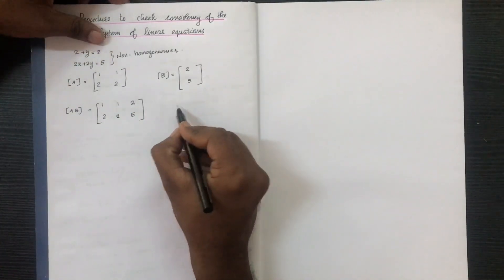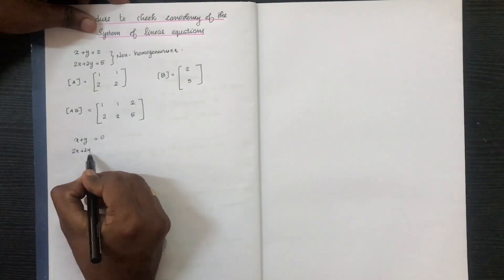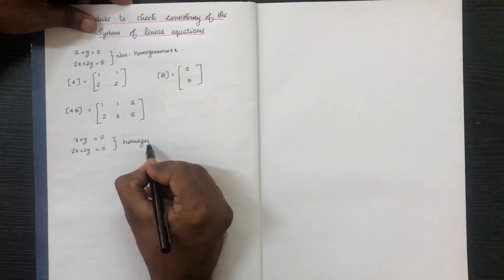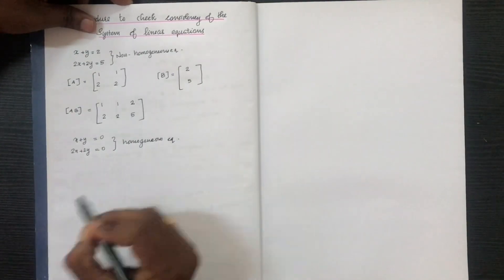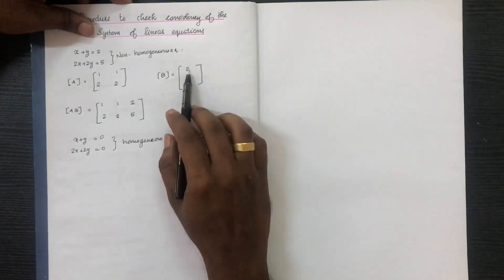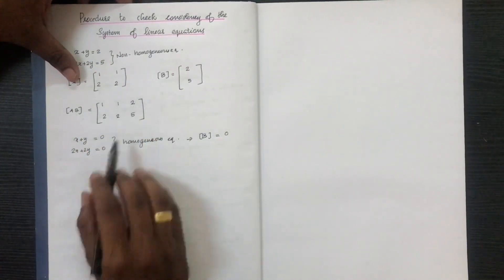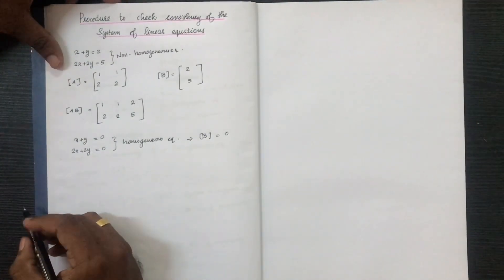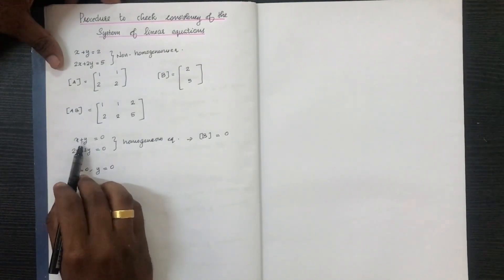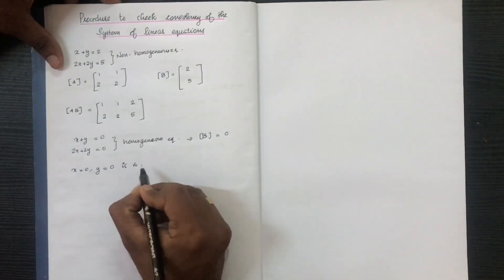When the right-hand side is equal to 0, x plus y equals 0 and 2x plus 2y equals 0. This is a homogeneous equation, where B is equal to 0. The solution x equals 0 and y equals 0 satisfies the system.